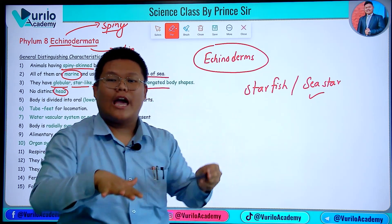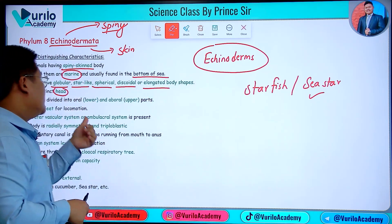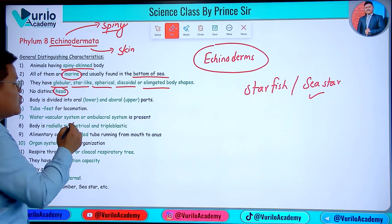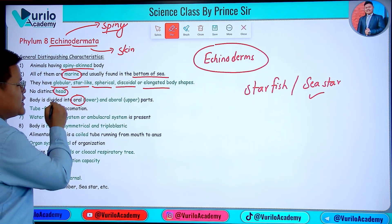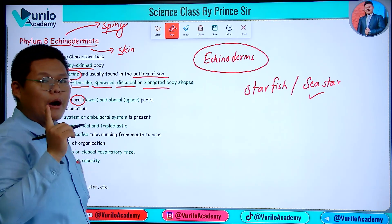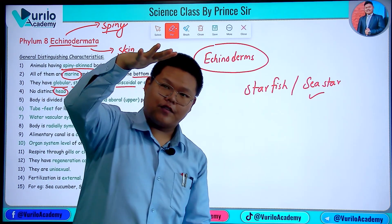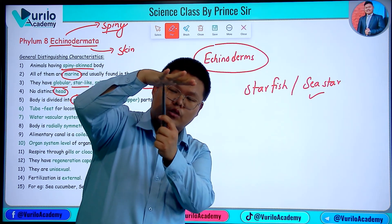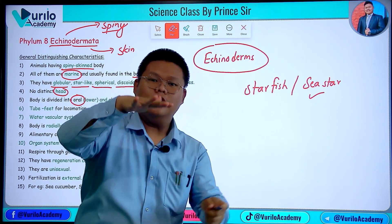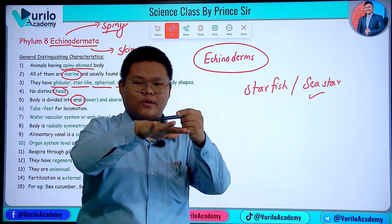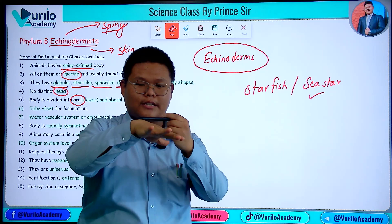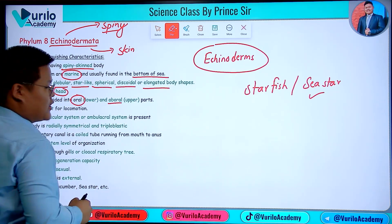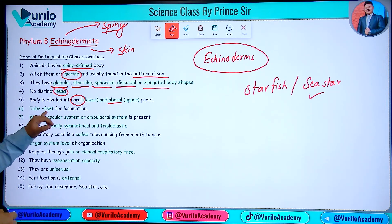In a starfish, there is an aboral part which is the upper portion, and the oral part is the lower surface where the mouth is present. The oral surface is mouth-related, and the aboral surface is where the anus is located.